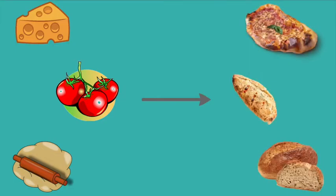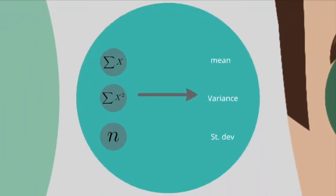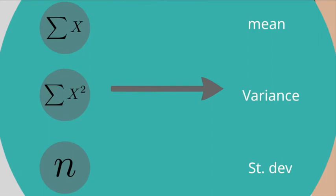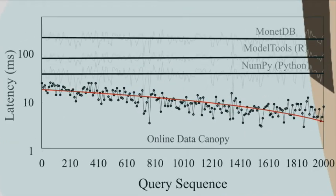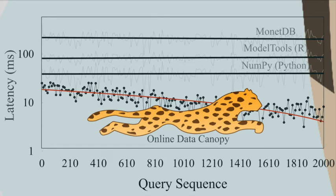Just like you can use different ingredients to cook different kinds of dishes, Data Canopy can use different basic aggregates to synthesize a variety of different statistics. What this means for exploratory statistical analysis is that repeated requests to compute statistics do not trigger multiple passes over the dataset, leading to an improvement in query execution time. Compared to other tools that repeatedly access data and provide static and slow performance, the performance of Data Canopy keeps on improving as future queries can use past computations and data access. Data Canopy shows several orders of magnitude performance improvement.